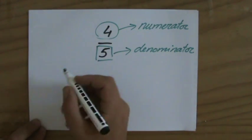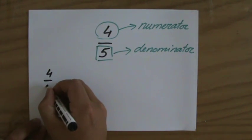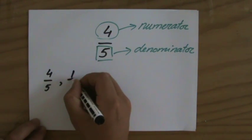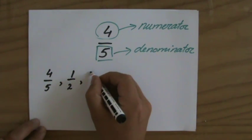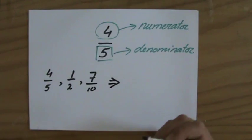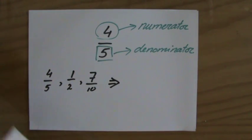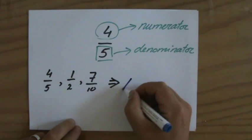If for instance I have the fraction 4 over 5, but also for instance 1 over 2 or 7 over 10, we call those proper fractions.